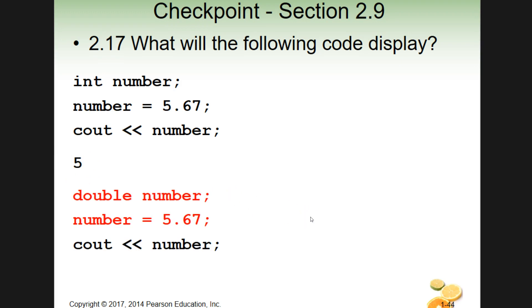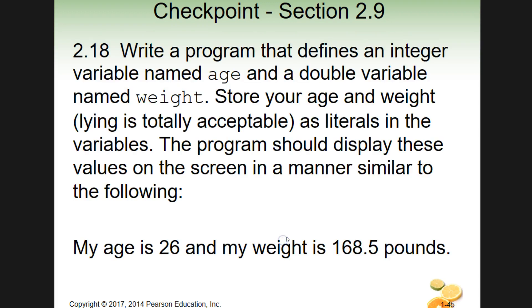So to correct that, we do something like this. So double number, number equals 5.67. And we have our cout for our number here. And then it will display the correct 5.67, floating point number. Kind of cool stuff. I don't know. You'll see, you use doubles a lot. So anyway.